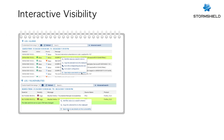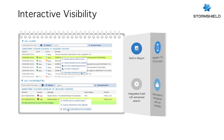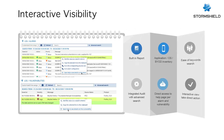StormShield Next Generation Firewall offers built-in interactive visibility for audit logs and real-time traffic monitoring. Administrators can monitor ports, live traffic, alarms, applications, and vulnerabilities from a graphical user interface, and take direct actions from the interactive view. Help pages are available for every alarm and detected vulnerability, providing technical details and references to help administrators make the right decisions to secure their networks.